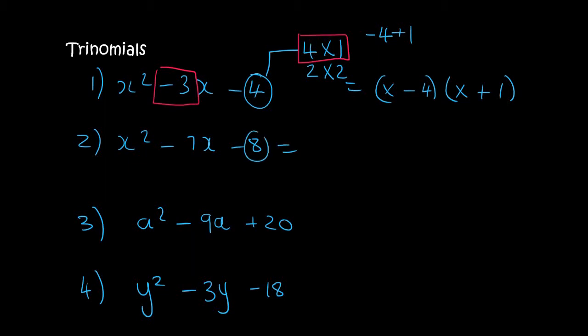With this one we look at the number 8 which is 8 times 1 or 2 times 4. 8 and 1 can make minus 7, so we open up two brackets and we say x and x. How does 8 and 1 make minus 7? It's minus 8 plus 1, so we say minus 8 and plus 1.